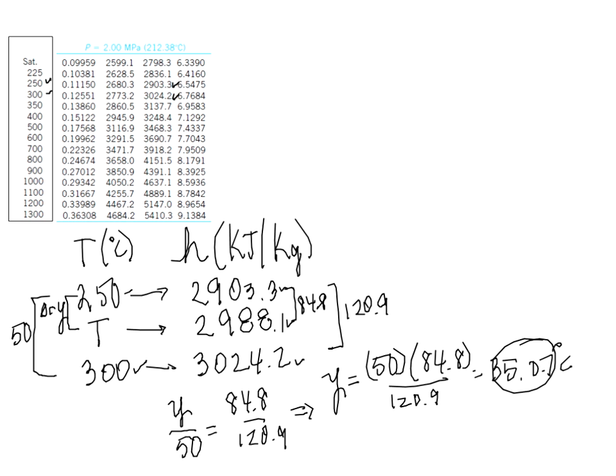So there's a difference and this is in degrees Celsius. When I look at 250 and 300, it's increasing. So this 35 should be added to the 250. So 250 plus 35.07 equals 285.07 degrees Celsius. This is the actual temperature and that's the answer to this problem.